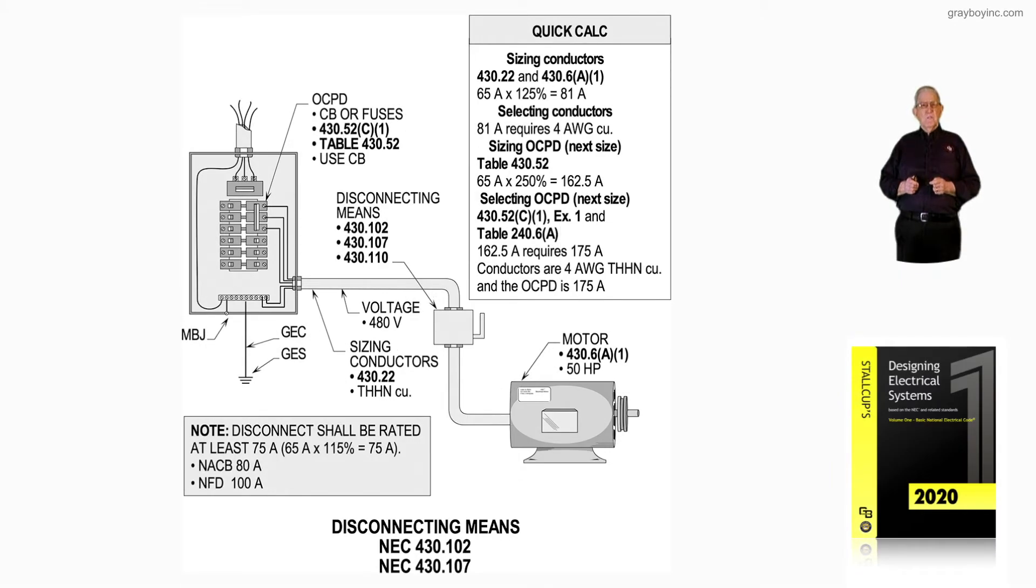This illustration deals with the disconnecting means to a motor in accordance with NEC 430.102, which gives location, 430.107, as well as 430.109A1 and 430.110A. Section 430.107 tells you you've got to disconnect all the ungrounded legs to the motor with the disconnecting means. That's why a controller cannot be used as a combination disconnect and controller.